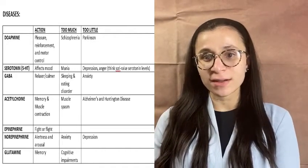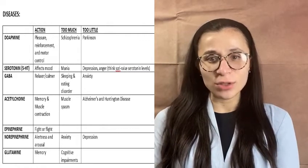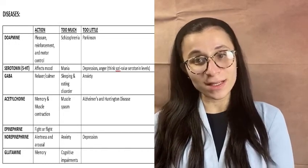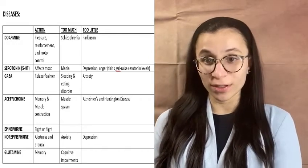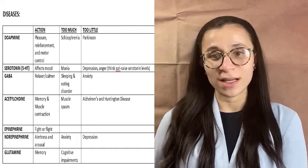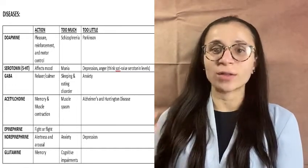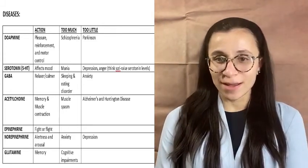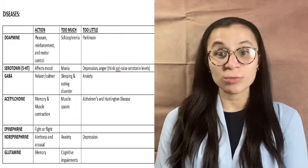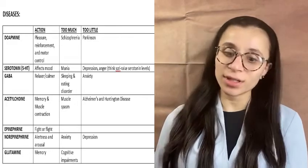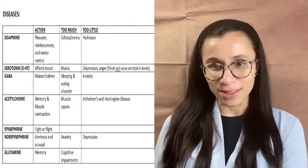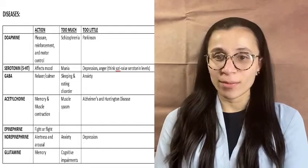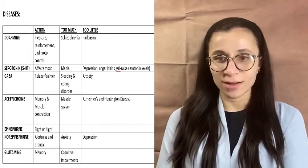The next one is serotonin. Serotonin mainly affects mood, hunger, sleep, and arousal. How I like to remember it is that serotonin is a really long word with multiple aspects — it affects all those things: mood, sleep cycle, and more. Too much serotonin is going to make you manic and crazy, and too little is going to make you depressed. So just remember serotonin, the long word, and think about the mood, the sleep cycle, and everything related to that.